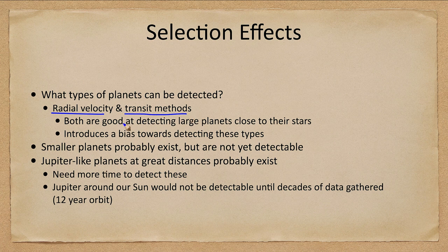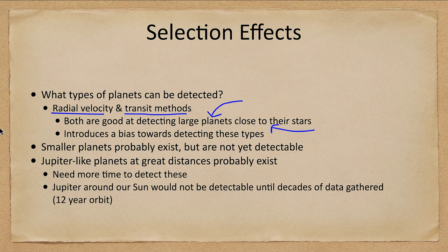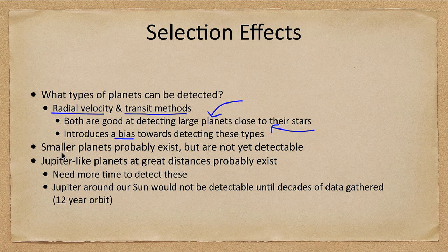These methods are very good at detecting large planets close to their stars. Large planets give a stronger radial velocity shift and dim more of a star's surface, making them easier to detect, and we get radial velocity shifts and transits more frequently. This introduces a bias toward detecting these types, so maybe we've detected a lot of hot Jupiters simply because they're easier to detect, and they may not be as common as we think.